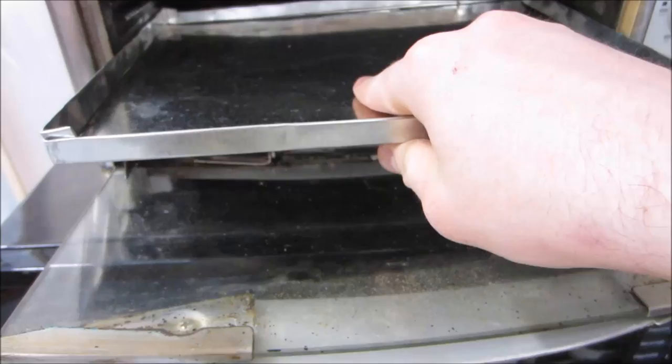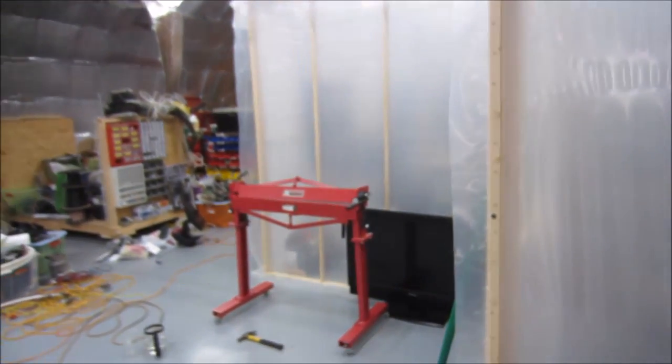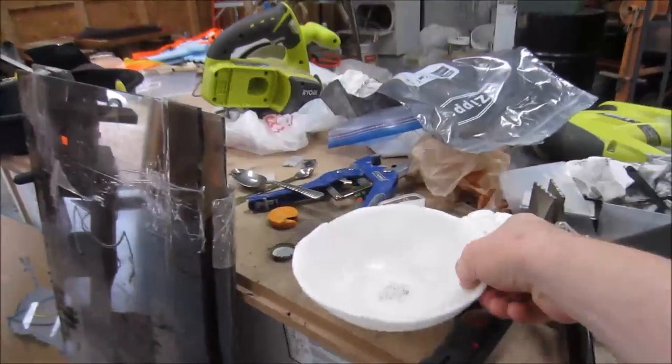So I finally broke down and I used the toaster oven. I threw together a quick baking sheet from some duct steel using my metal brake, and I was able to get the plastic actually too hot. You can see here it actually got a little bit bubbly.